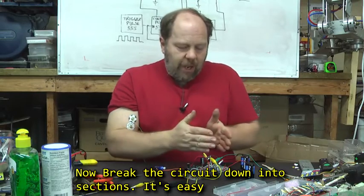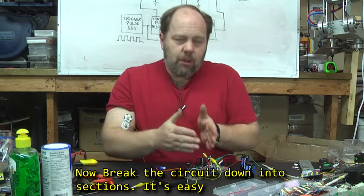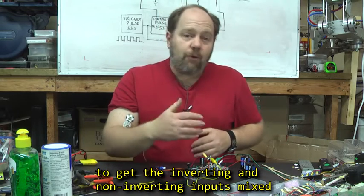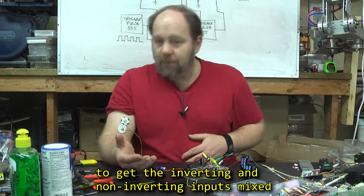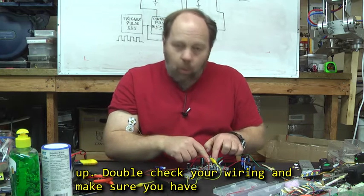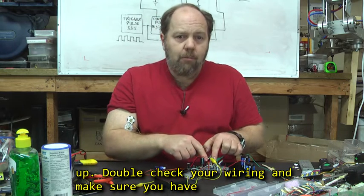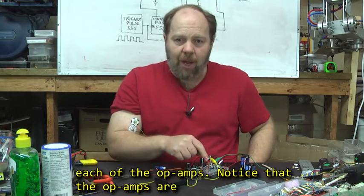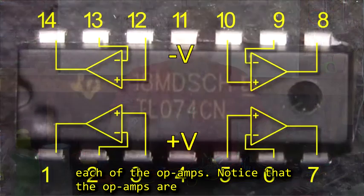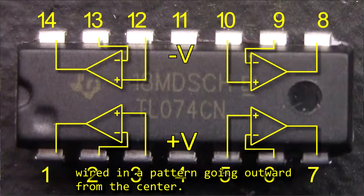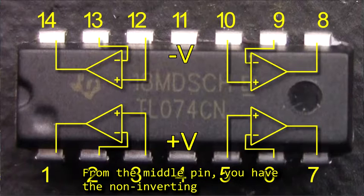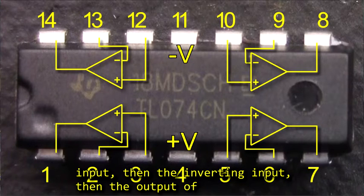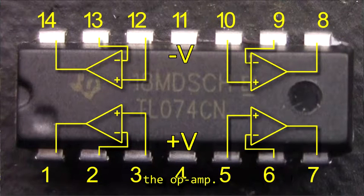Now, break the circuit down into sections. It's easy to get the inverting and non-inverting inputs mixed up. Double check your wiring. Make sure you have the resistors and the wires going to the right pins on each of the op-amps. Notice that the op-amps are wired in a pattern going outward from the center. From the middle pin, you have the non-inverting pin, then the inverting pin, then the output of the op-amp.